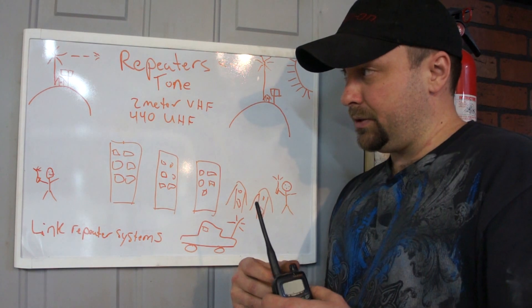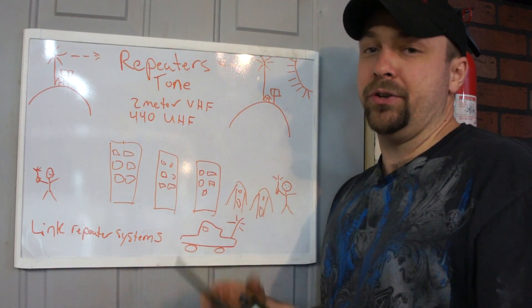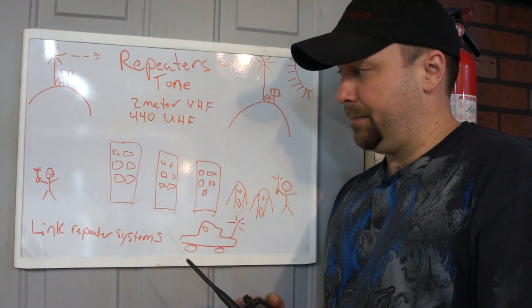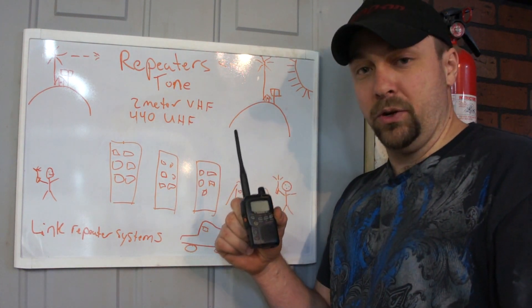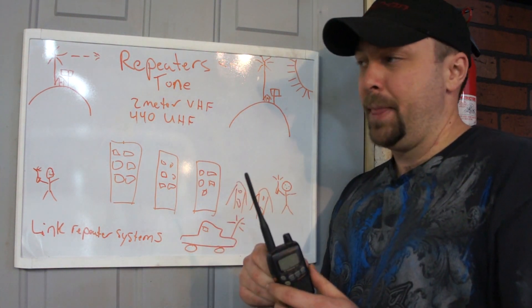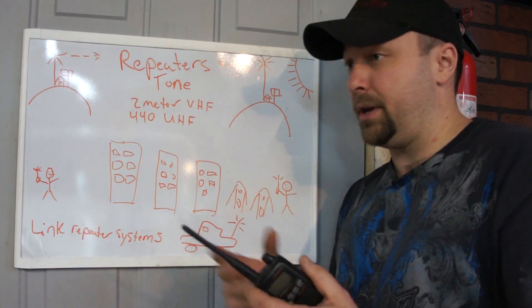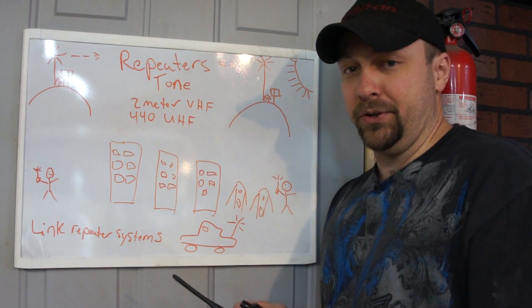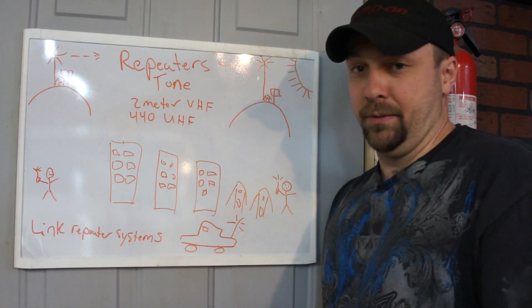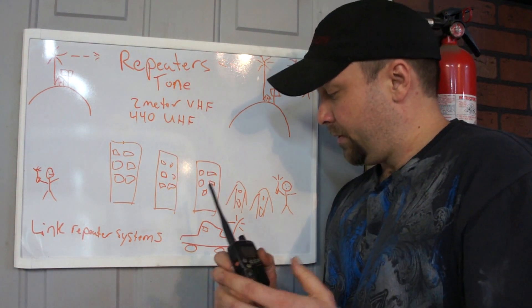And still utilize your small radio, handheld radio or mobile radio in your car, but now talk to somebody that could be a thousand miles away. And it's done through multiple repeaters in a link repeater system though, in a quick nutshell.